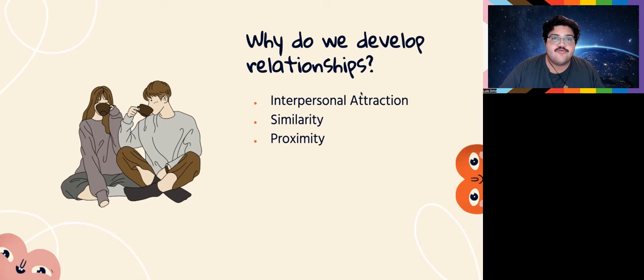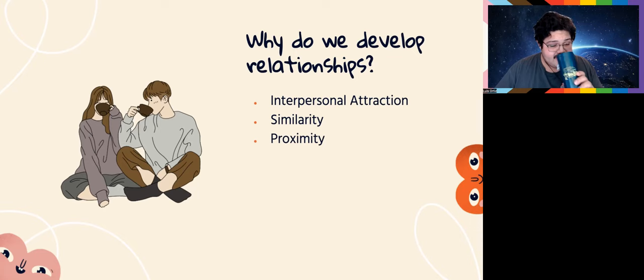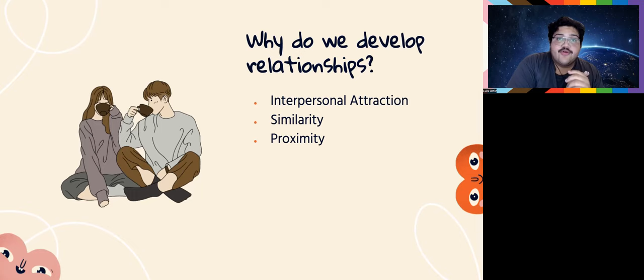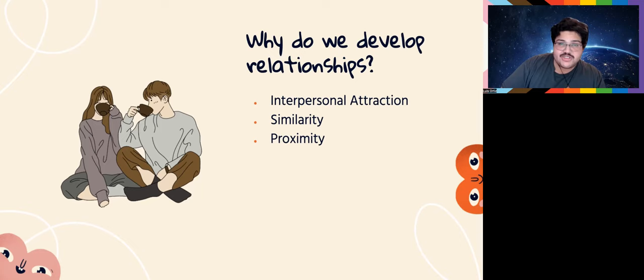Then there's proximity. When you're sitting in class, the people you sit around you're going to be a lot closer to relationship-wise than somebody sitting halfway across the classroom — you're just not in close enough proximity to talk respectfully. This is also why long-distance relationships can struggle: proximity is very important to relationships.